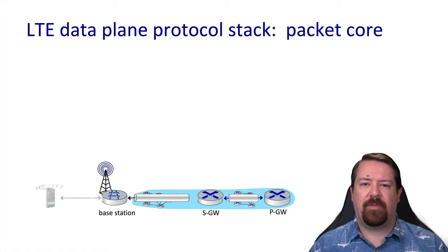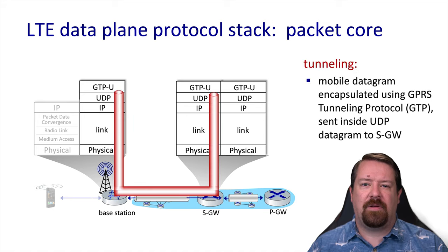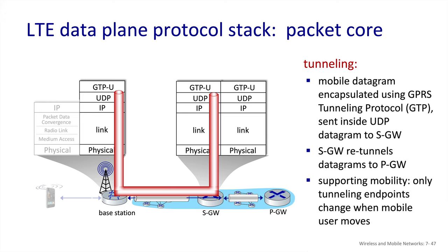On the packet core side of the network, we have the protocol stack required to enable tunneling. While link technologies use a traditional wired link with IP running over it, there is also a UDP layer and a tunneling protocol layer. Whatever data came from the user equipment — for example, an HTTP over TCP over IP packet — is encapsulated inside this tunneling protocol. The tunnel reaches the serving gateway, which decapsulates it and puts it in a new tunnel to get it to the packet gateway. The benefit of this tunneling architecture is that the user equipment can retain its IP address as it moves from place to place, because the subnet inside the tunnel is independent of the subnets over which the tunnel passes.